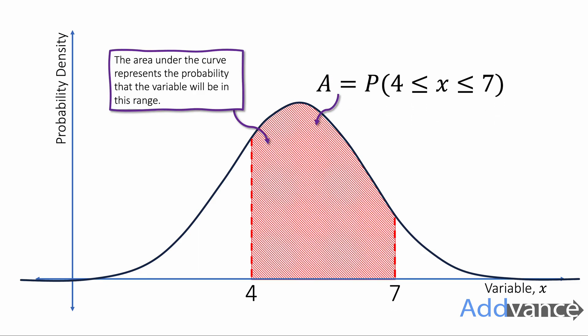The area under the curve shows you the probability that the variable will be in that range. So here the probability that 4 is less than or equal to x is less than or equal to 7 will be the area between 4 and 7. So the key idea here is that area shows you the probability, and that's why the y-axis isn't called probability, it's called probability density.